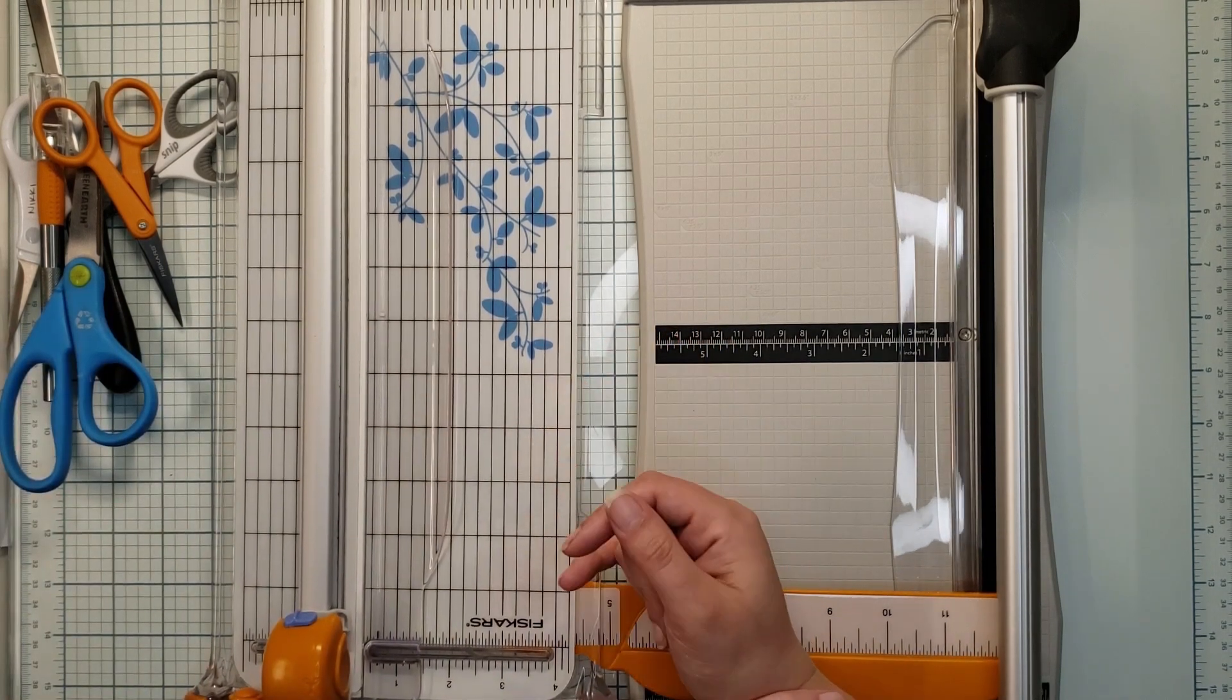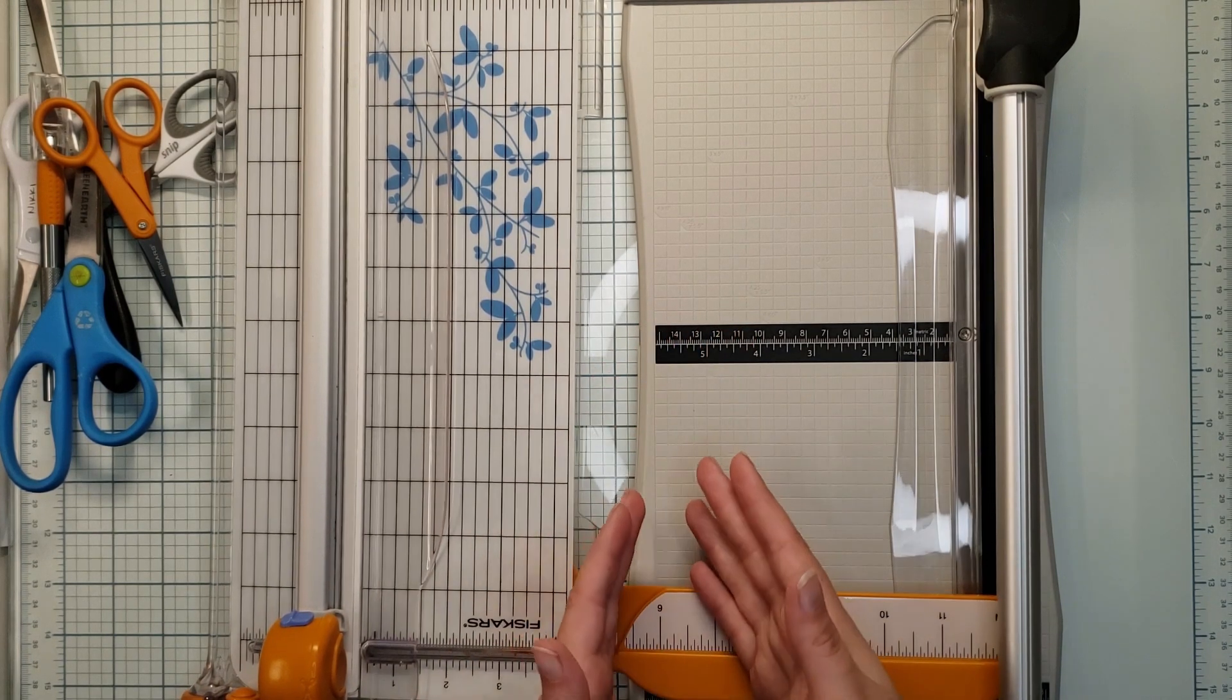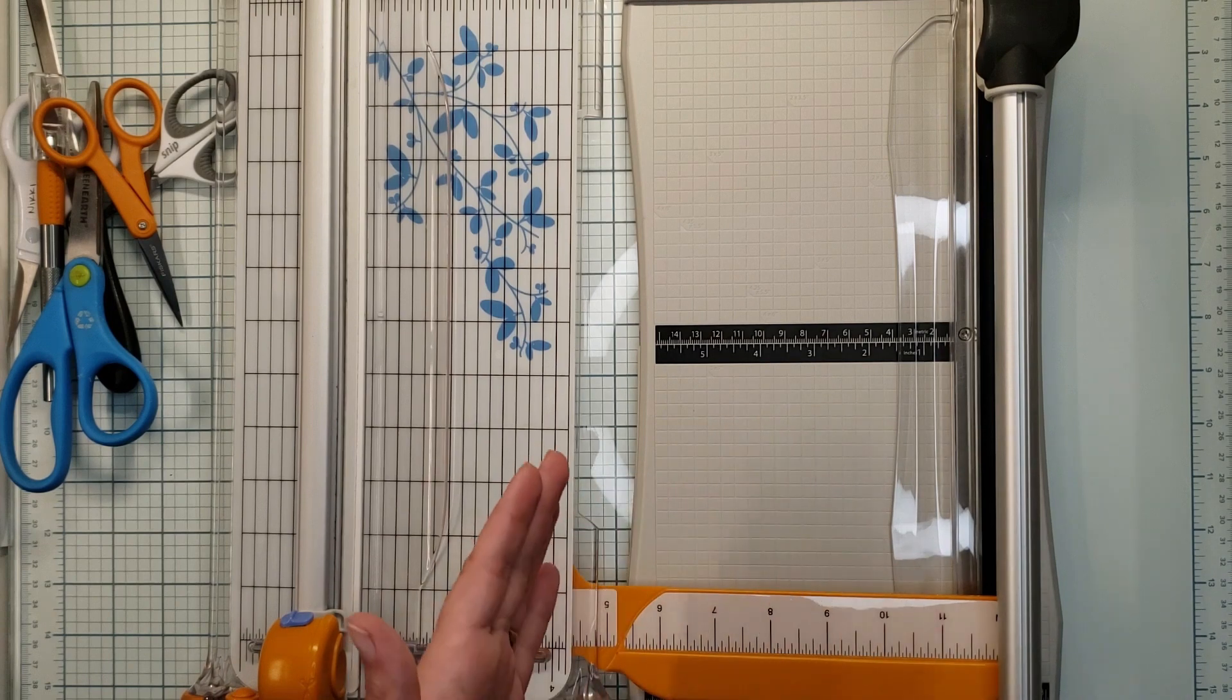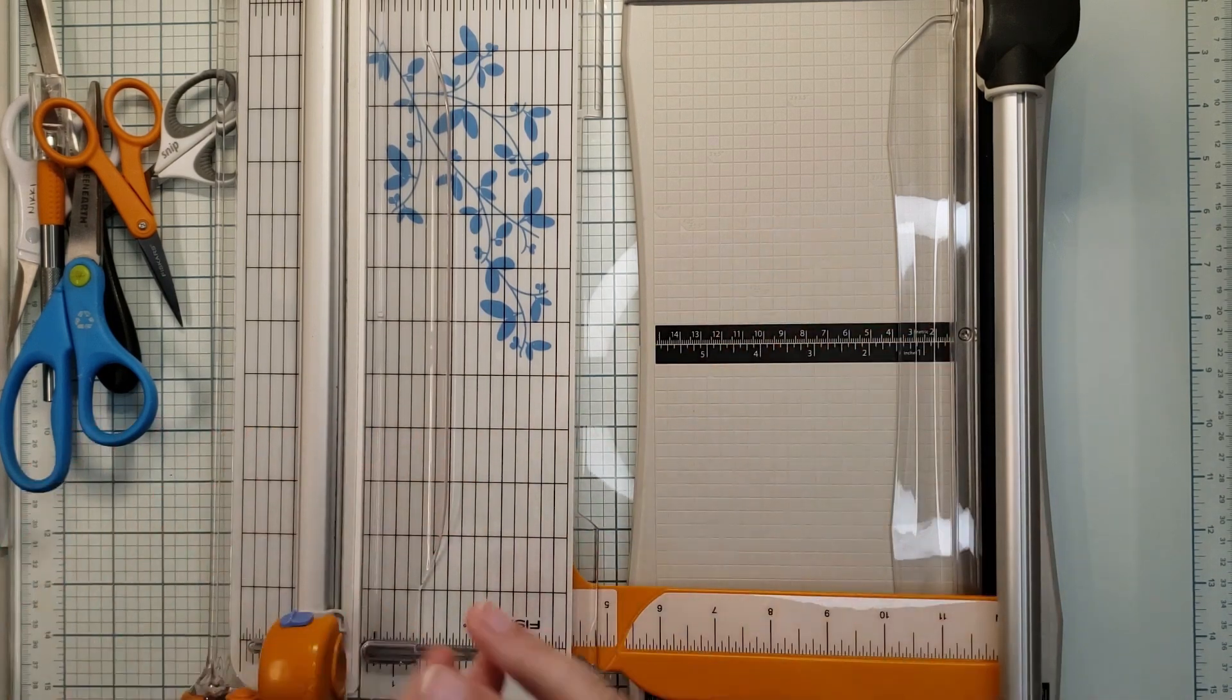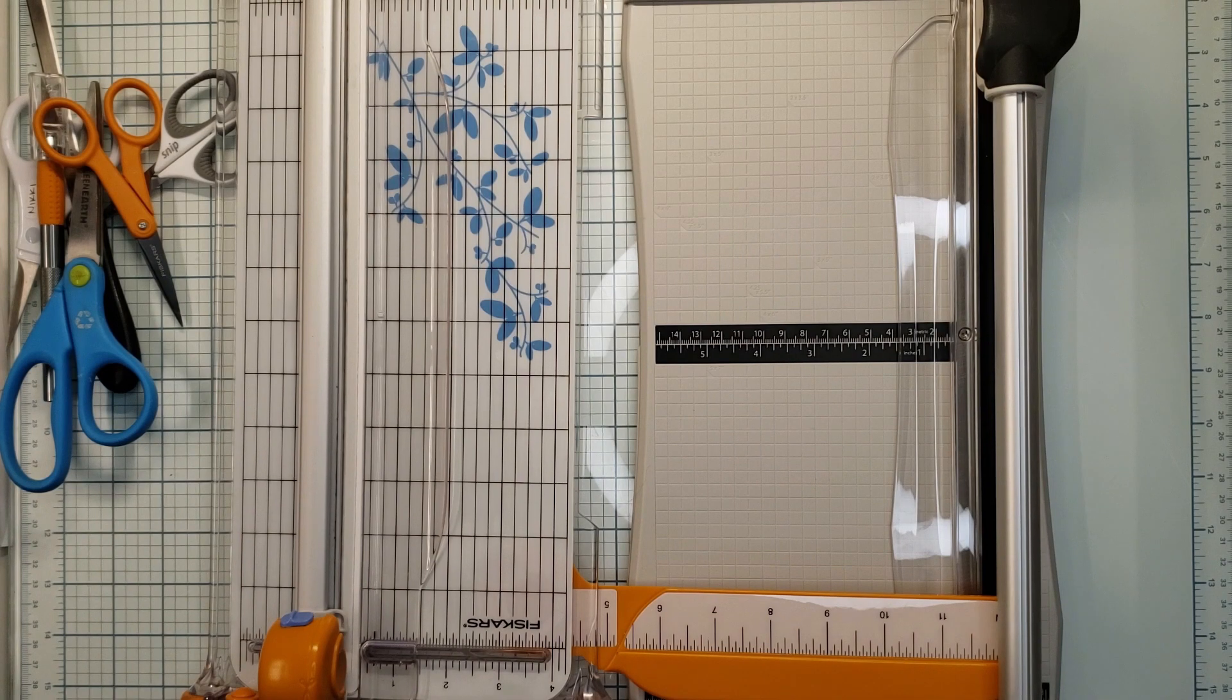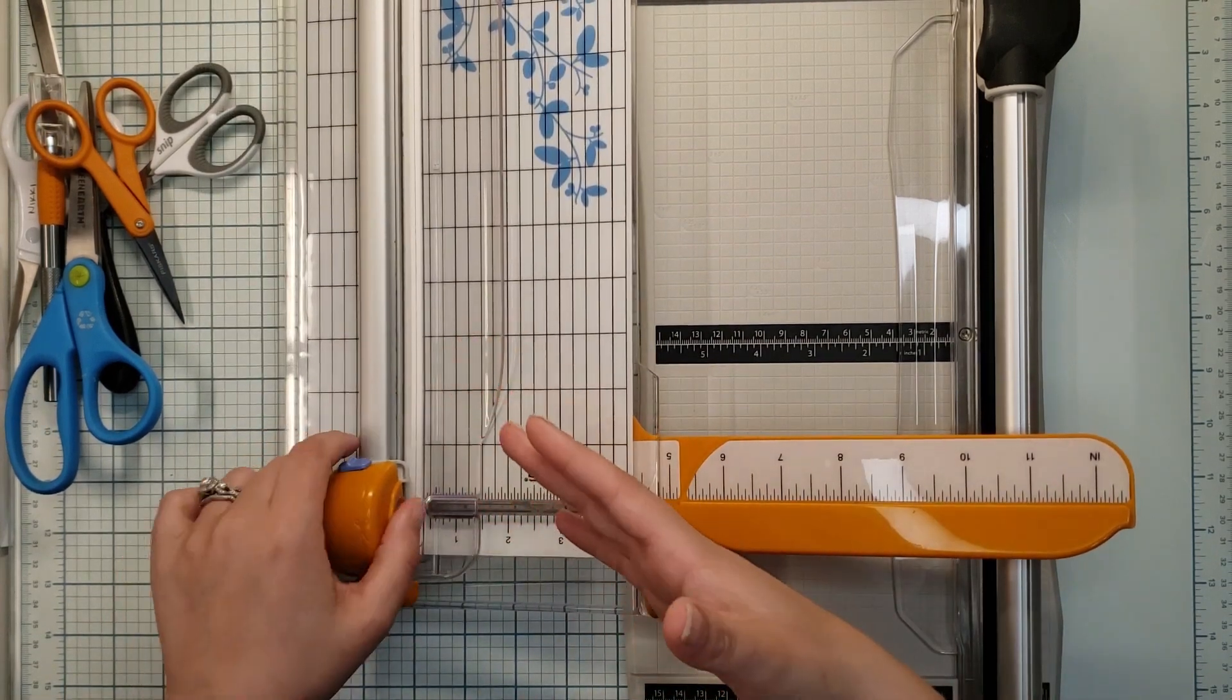I started with that trimmer because it was the cheapest at the time, and I wasn't really big into scrapbooking when I first started. But I discovered quickly that I was running through those trimmer blades super quick. So I researched and tried to find what other options are there, and that's where I landed on rotary style blades.